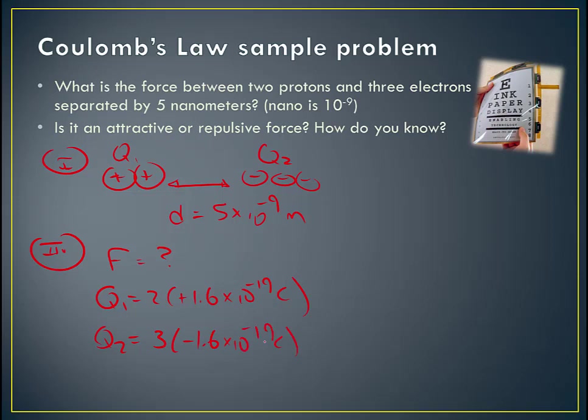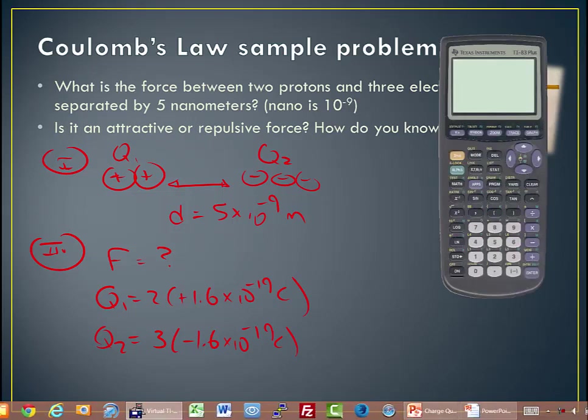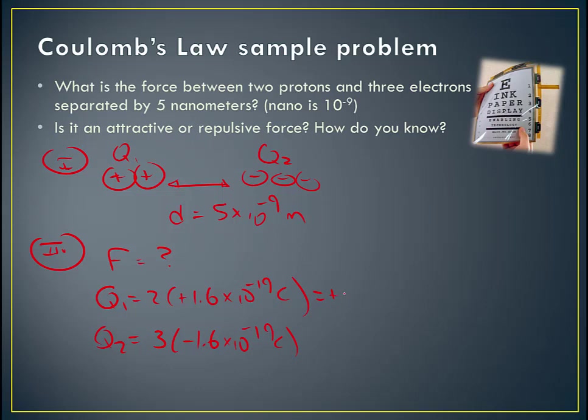So now I'm just going to get out my calculator and plug in these values. So to find Q1, I'm going to take 2 times, let's put this in parentheses, 1.6. And then remember the shortcut to enter scientific notation is you want to hit the second E button. 1.6 times 10 to the negative 19th coulombs. And so that's just going to be 3.2 times 10 to the negative 19th. So that's the charge of two protons.